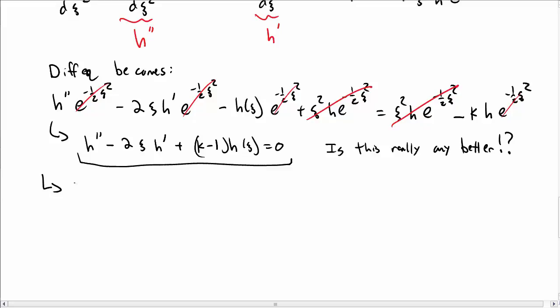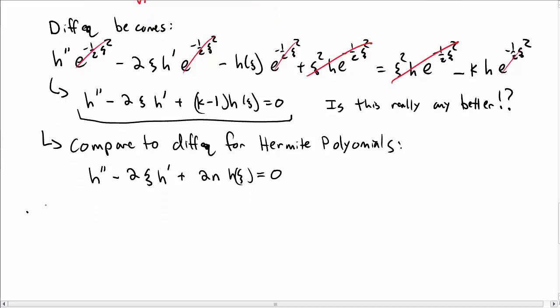Well, hang on a second. Let's compare this to a differential equation that we have seen before, or hopefully have seen before. Let's compare it to the differential equation for Hermite polynomials. So we'll look up the differential equation for Hermite polynomials. It's H'' - 2ξH' + 2n (where n is an integer) times H(ξ) = 0. Hey wait, that's the same differential equation!